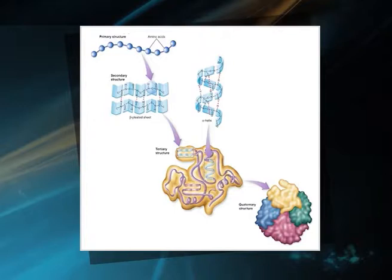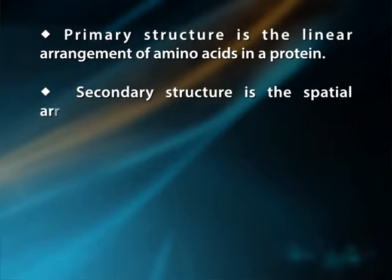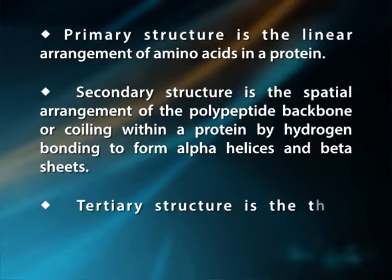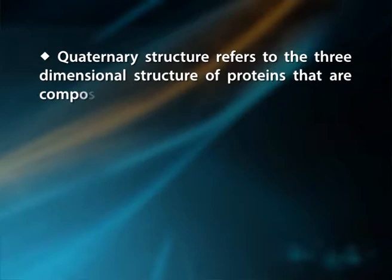Primary structure is the linear arrangement of amino acids in a protein. Secondary structure is the spatial arrangement of the polypeptide backbone, or coiling within a protein by hydrogen bonding, to form alpha helices and beta sheets. Tertiary structure is the three-dimensional structure of the entire polypeptide. Quaternary structure refers to the three-dimensional structure of proteins that are composed of two or more polypeptide chains called subunits.